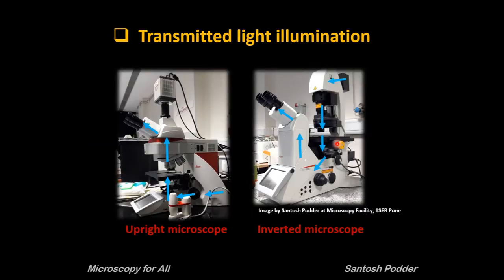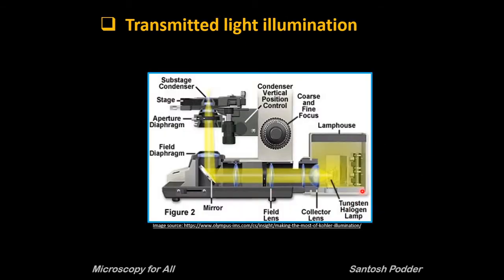Transmitted light microscopy techniques were the first ones developed as the microscope was being developed. In this technique, light is transmitted through the sample and then passes through the objective. In modern upright microscopes the lamp house is attached to the base, whereas in inverted systems it is on the top.